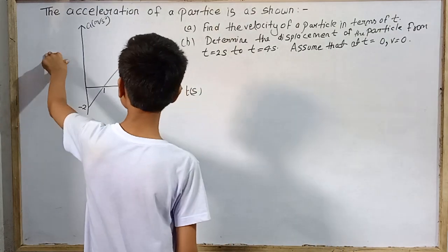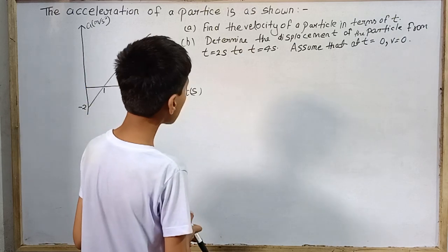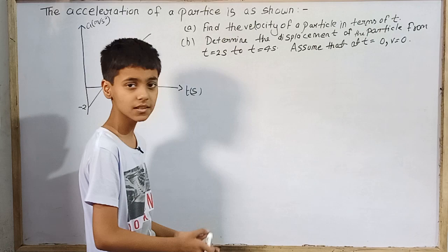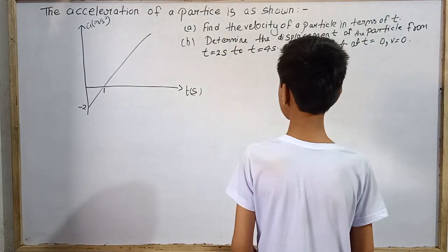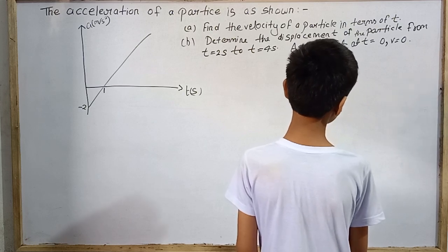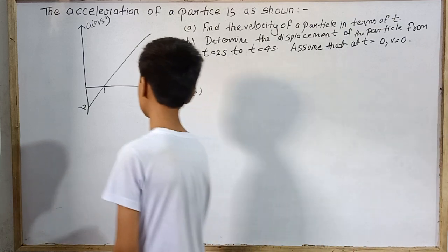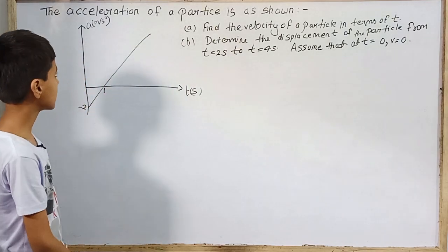Today's question is that the acceleration of a particle is as shown. Part a: find the velocity of a particle in terms of t. Part b: determine the displacement of the particle from t equals 2 seconds to t equals 4 seconds. Assume that at t equals 0, v equals 0. So this is the given question today.